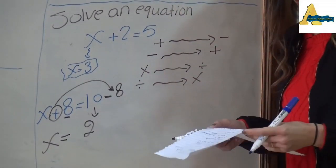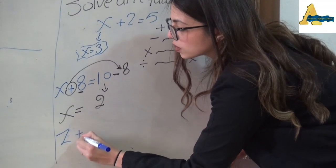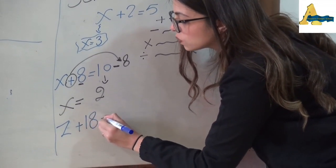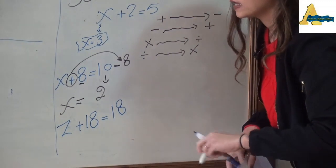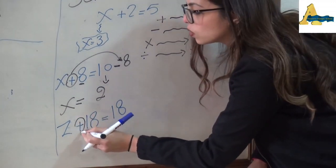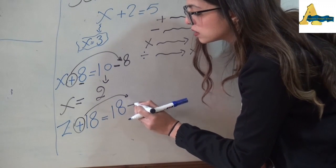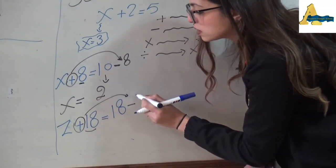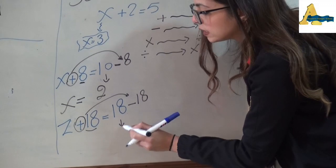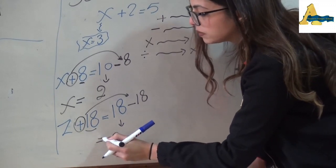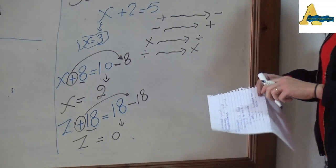Another example: z + 18 = 18. The plus will go after the equal as minus. Minus 18: 18 - 18 = 0. That means z = 0.